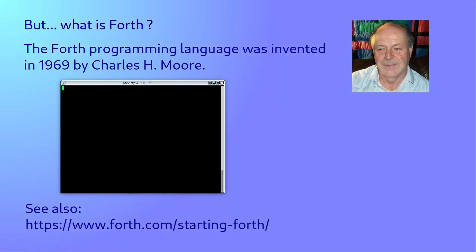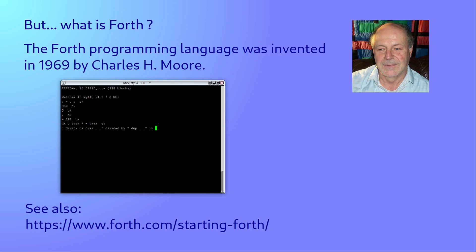The Forth programming language was invented in 1969 by Charles Moore. Forth is a stack-based, low-level programming language that follows reverse-polish notation, where operators are placed after their operands. Forth programs consist of a set of so-called words, which can be defined and redefined interactively. The language does not have a traditional compiler. Instead, it is interpreted or compiled on the fly, making it highly interactive and suitable for small and simple computer systems.